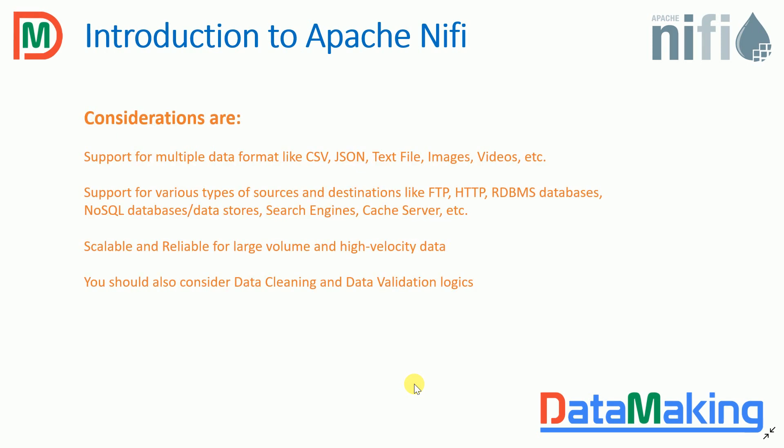When you build an ETL pipeline, you need to ask yourself whether the data pipeline can handle different types and formats of data. Does the pipeline have connectors for different data sources like HTTP sources and RDBMS? Once you take data from the source, how do you transform it, and if the target is NoSQL or RDBMS, how do you store it? You also need to consider scalability — how will the solution scale with large amounts of data — as well as data cleaning and data validation logic.